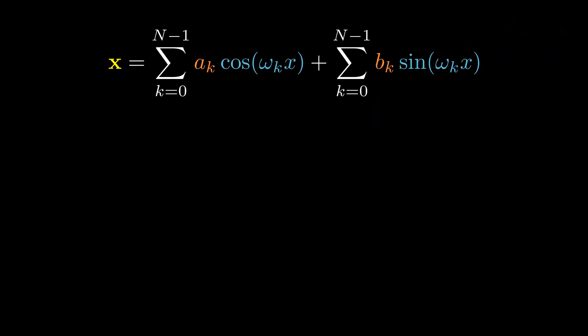Similar to the 2D case, we find the coefficients ak and bk by computing the dot product between the signal x and the basis vectors. This is the core idea of discrete Fourier transform.